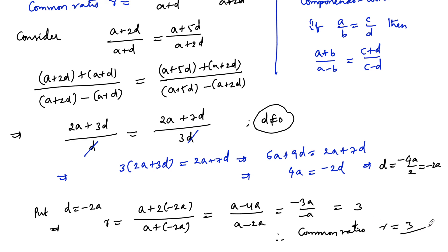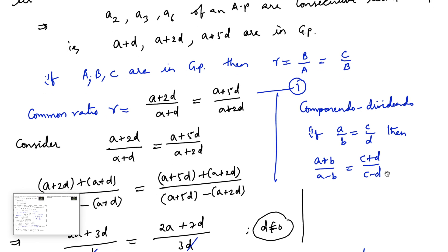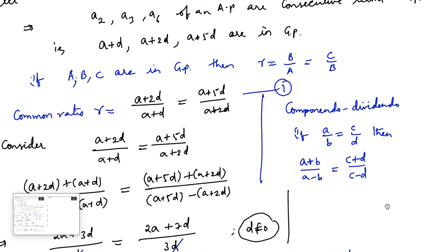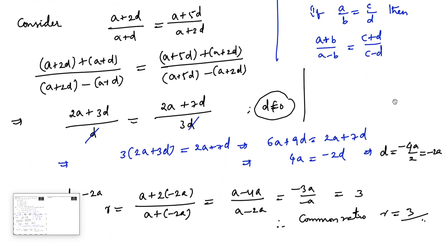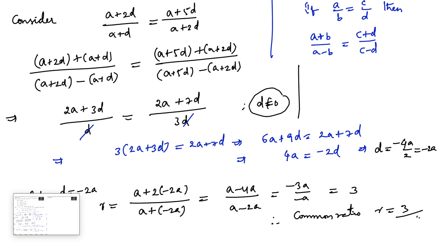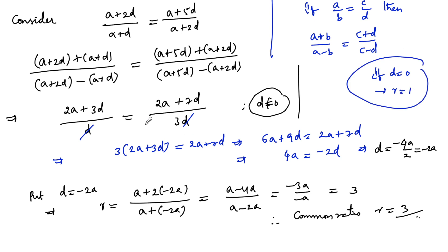The common ratio r = 3. We also note that if d = 0, all terms would be equal and the common ratio would be r = 1. Since we assumed d ≠ 0, we get the answer r = 3.